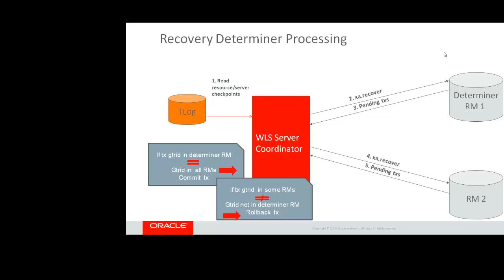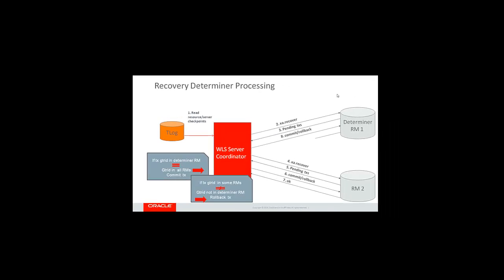The logic is that if the transaction is not pending on the determiner resource, prepare has not been called on that resource yet. The determiner will be the last one to be prepared in the global transaction, so the recovery outcome is a rollback. Commit or rollback is called on all non-determiner resources, and then on the determiner last. The transaction manager did not have to read any transactions from the transaction log, nor clean them once complete — that is what gives this feature its optimization.